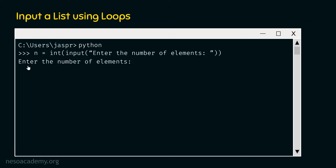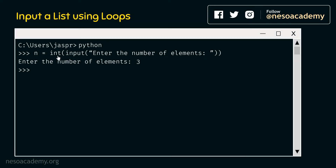After hitting enter, we get the prompt 'enter the number of elements'. Let's type 3 — we want to enter three elements. Hitting enter, we see three dots indicating everything is working correctly. n is now pointing to integer 3, not character 3, because we typecasted the input already.